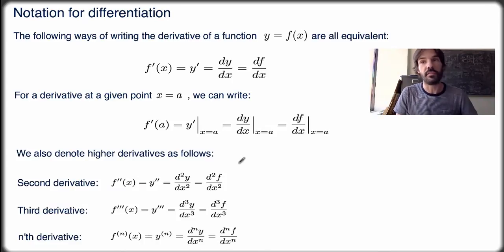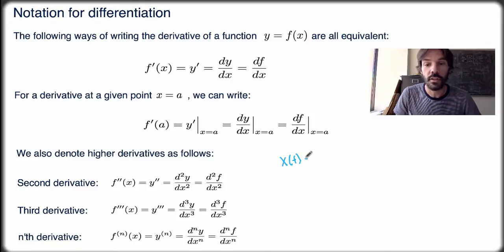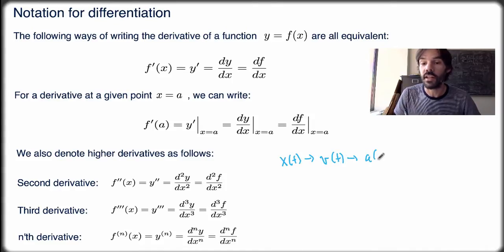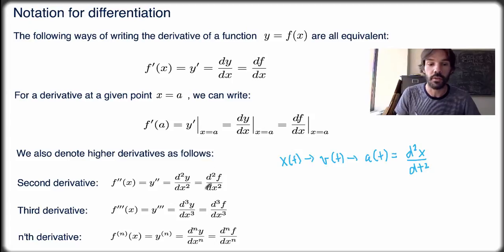There are also higher derivatives that we can calculate. For example, the second derivative means you're taking the derivative twice of a function. An example of that: if you start with position, you can calculate the velocity, which is the first-order derivative of position. Then you can calculate acceleration, which is the derivative of velocity — which is itself the derivative of position. So acceleration really is the second-order derivative of position.